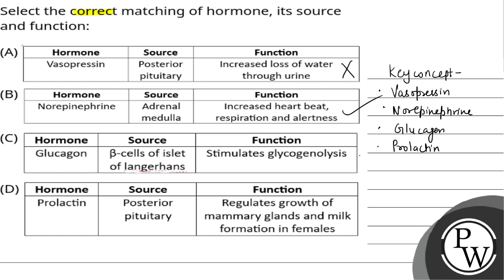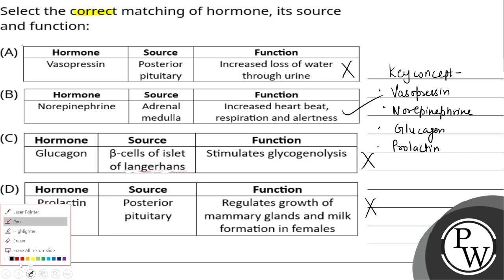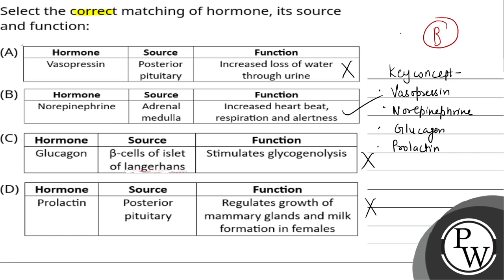Glucagon is not released from beta cells — it is released from alpha cells, so option C is incorrect. Prolactin is released from the anterior pituitary gland, not the posterior pituitary gland, so option D is also incorrect. Therefore, the correct answer is only option B.